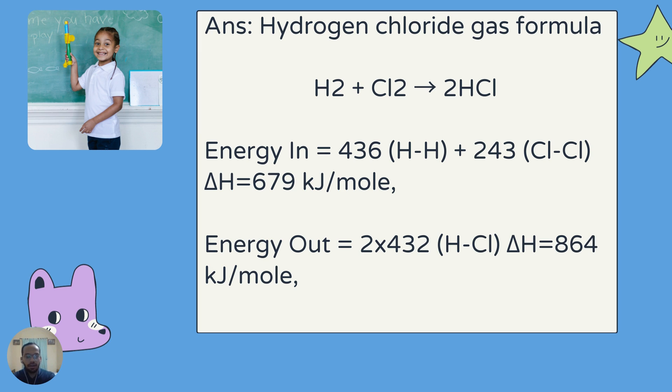Energy in is 436 plus 243. 436 is for H-H bond, and 243 is for Cl-Cl bond. So, it will give us a value of 679 kJ per mole.